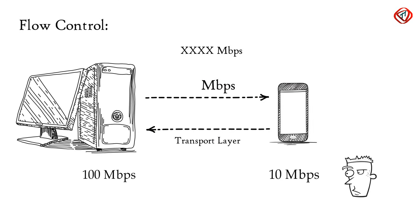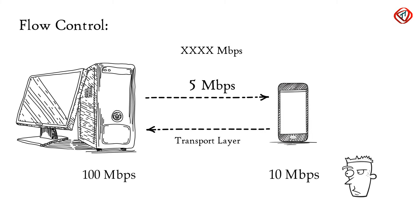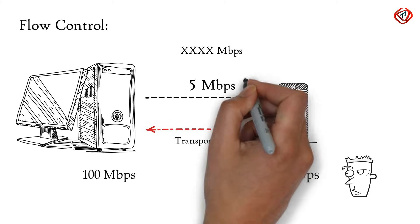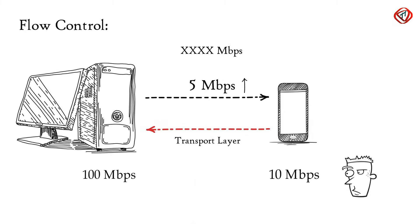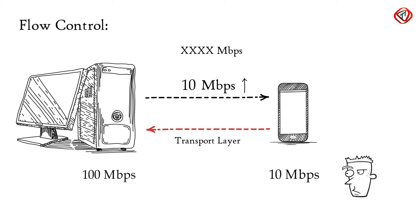Similarly, if the server is sending data at 5 Mbps, the mobile phone tells the server to increase the data transmission rate to 10 Mbps to maintain system performance.